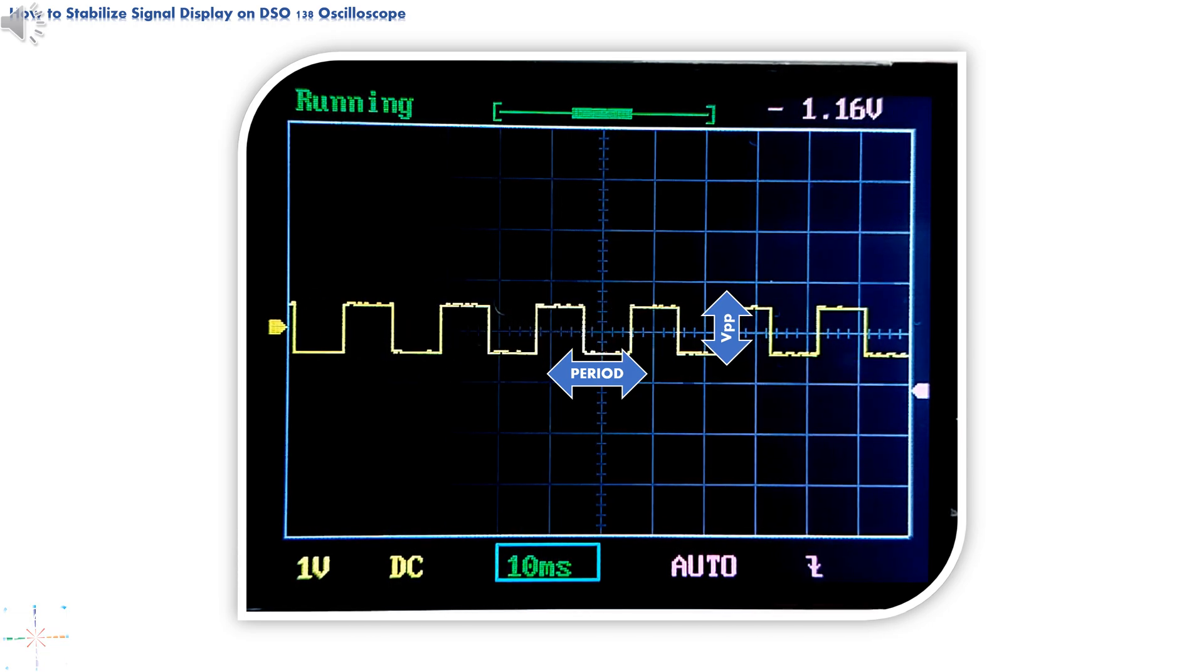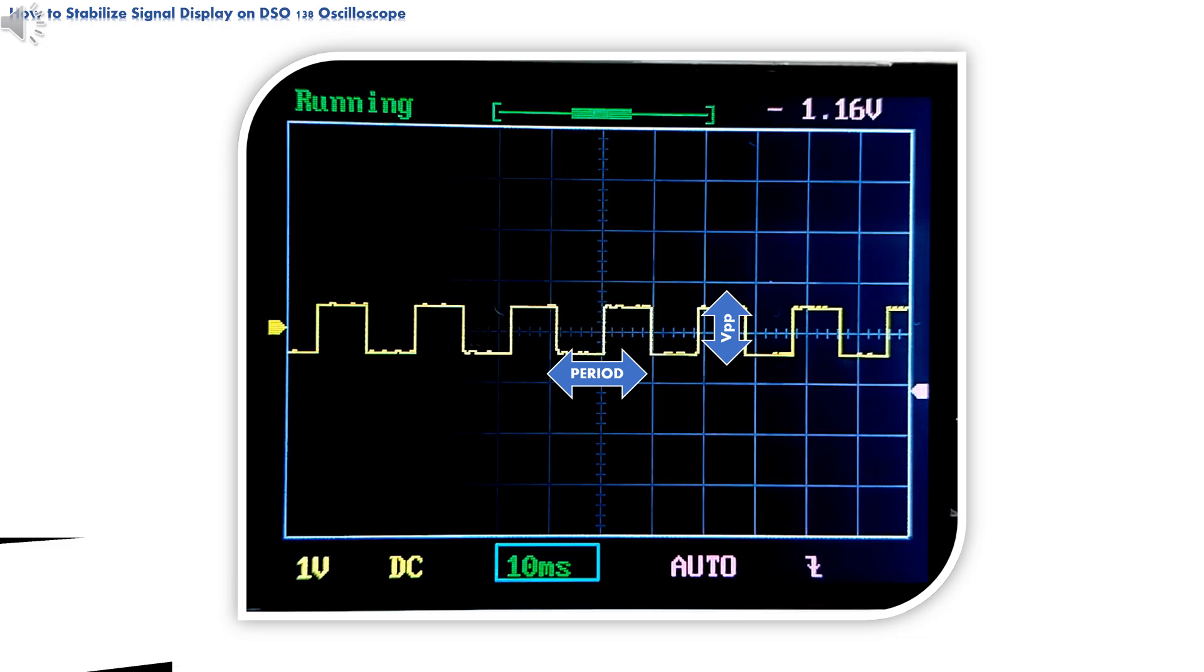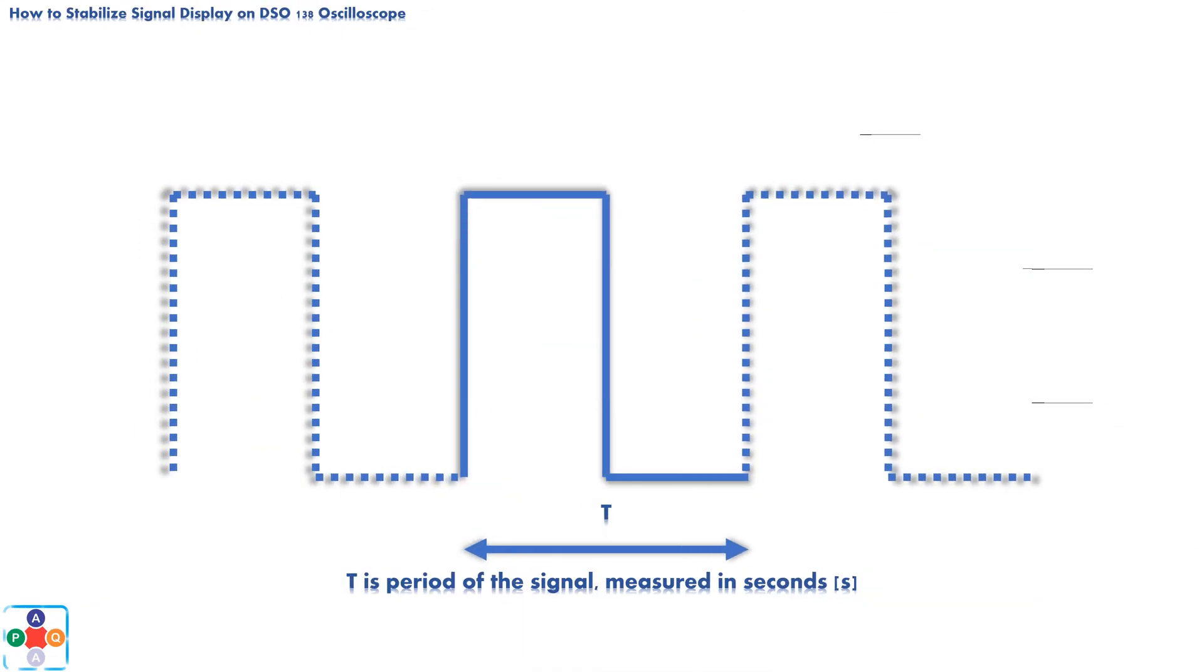Before we learn how to fix this issue, first let's talk about square signal in general, and what are some of the important signal properties you should be familiar with. Let's consider our ideal square signal. We should preface this part of the video with mention that in real life there is no ideal square signal, but for educational purposes and the purpose of this video we will consider our square signal to be ideal.